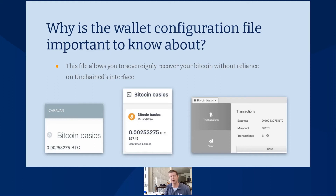In the example screenshots below, I have a Bitcoin Basics vault that I've created on the Unchained platform, funded with a little bit of Bitcoin. I've downloaded this wallet configuration file for this vault. On the left-hand side, I fed that file into Caravan, which is an open source multi-sig recovery tool engineered by Unchained. It is completely different from the Unchained platform interface, but I was able to load up my treasure map — my balances showed exactly correctly along with the title of my vault, the Bitcoin Basics vault. On the right-hand side, I did the exact same thing within a wallet called Sparrow wallet, which also read this treasure map.